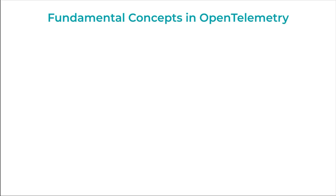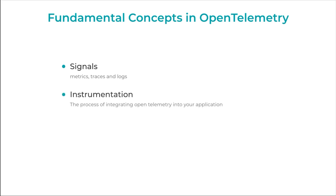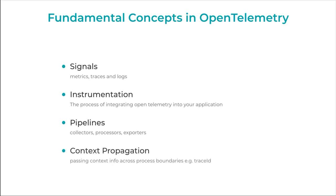Now let's take a look at some fundamental concepts in open telemetry. We'll start with signals, which are metrics, traces and logs. And then we'll take a look at instrumentation, pipelines, collectors, processors and exporters. And then finally we'll take a look at context propagation. These are very important concepts in the world of open telemetry.